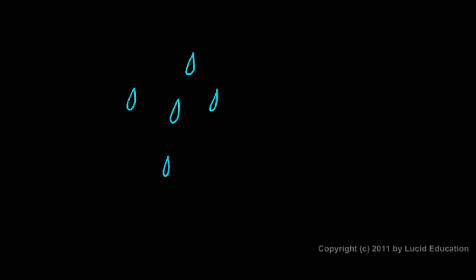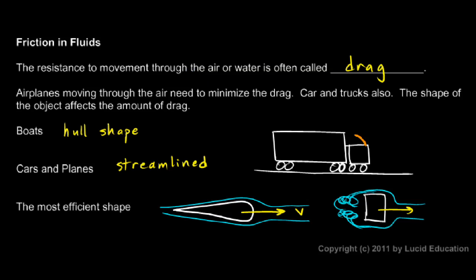The forces of the air resistance on the raindrop, as it falls, those forces push the raindrop into that shape. And that's the most efficient shape for moving through the air.